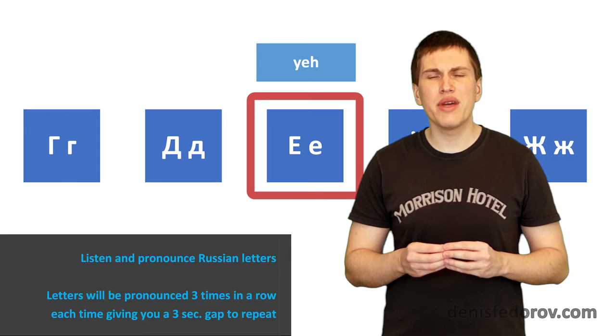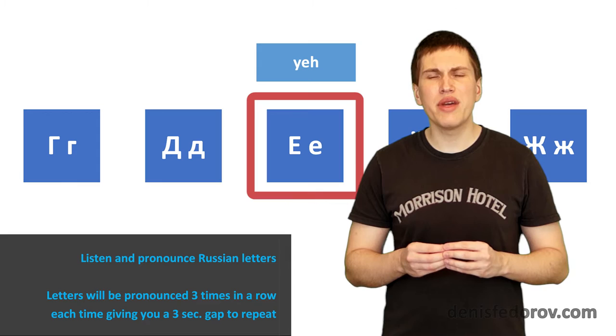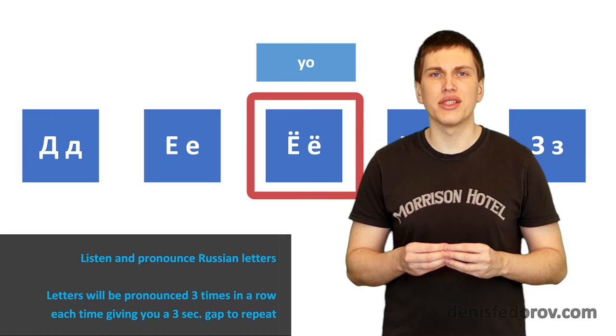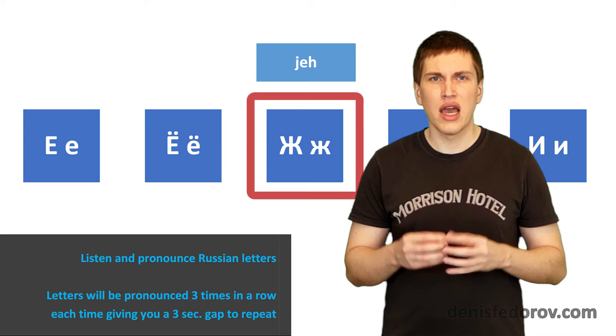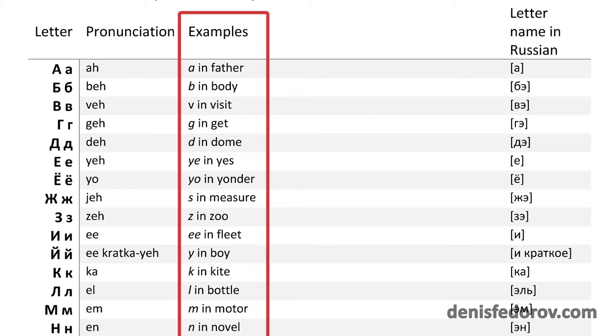But there may be a situation when it's hard to recognize a letter by hearing, and even the promptings above the letters are not enough to understand how to pronounce properly. In this situation, you take the Russian alphabet PDF and find the answer in the third column, which gives English examples for the sounds of the letters.